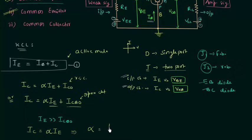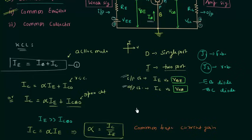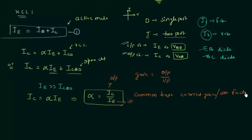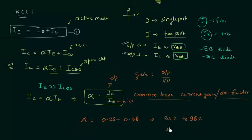Therefore, alpha equals IC divided by IE. Alpha is the common base current gain, also called the amplification factor. Since gain equals output divided by input, IC is the output current and IE is the input current. Alpha has a value between 0.95 and 0.98, which implies that 95% to 98% of the emitter current becomes the collector current, with a 2% to 5% recombination occurring in the base.